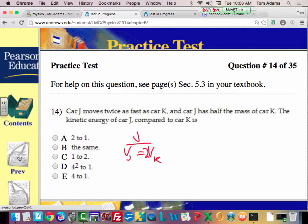And then J has one half the mass of K. So now the mass of J is literally one half of VK. Does that make sense?